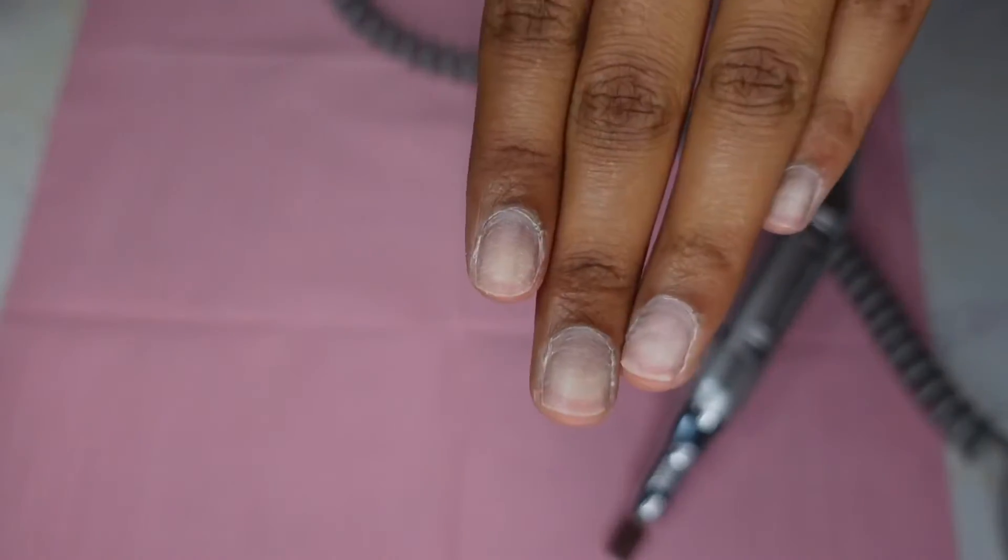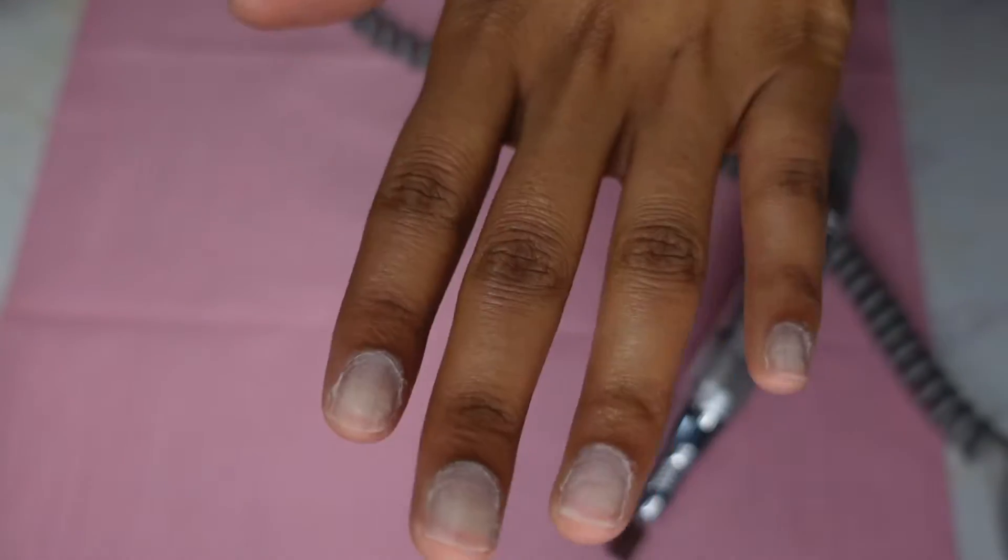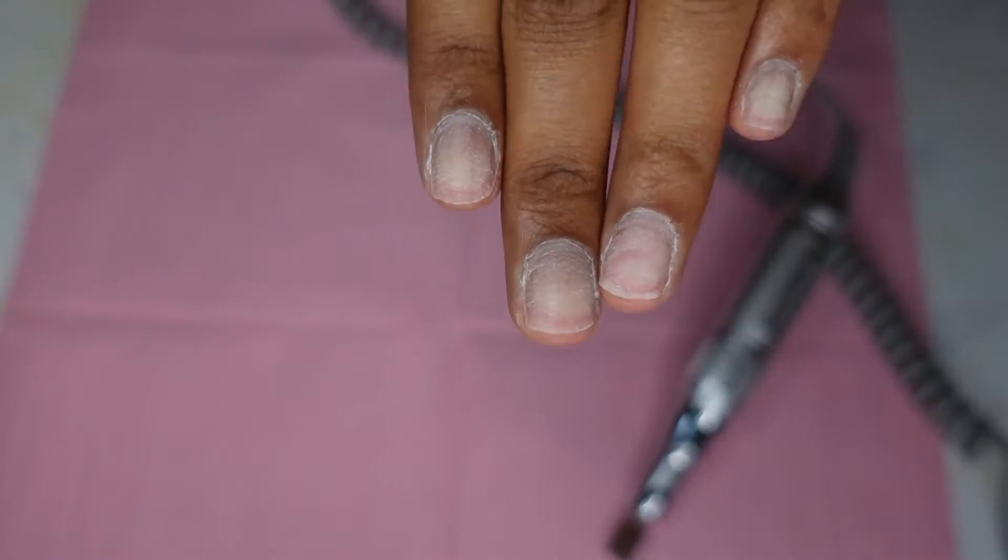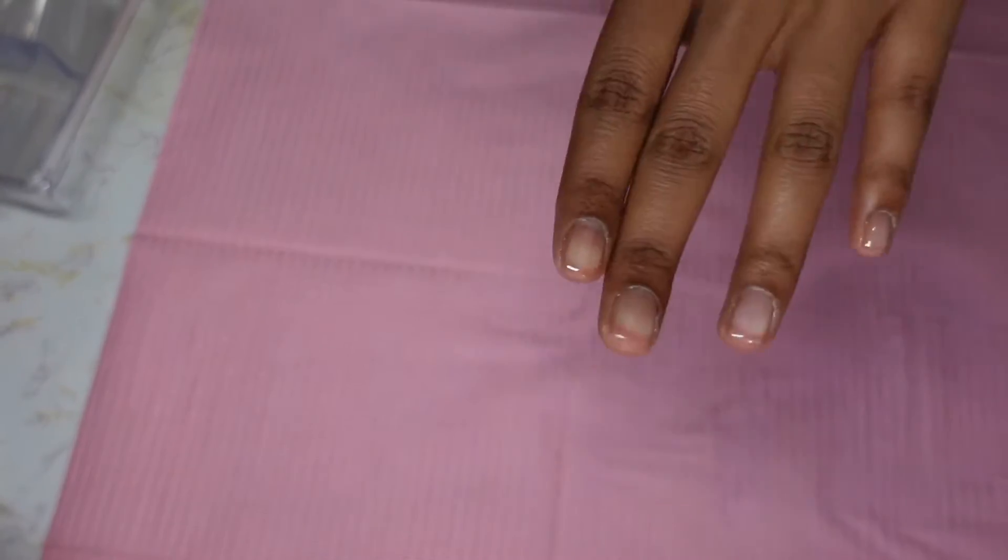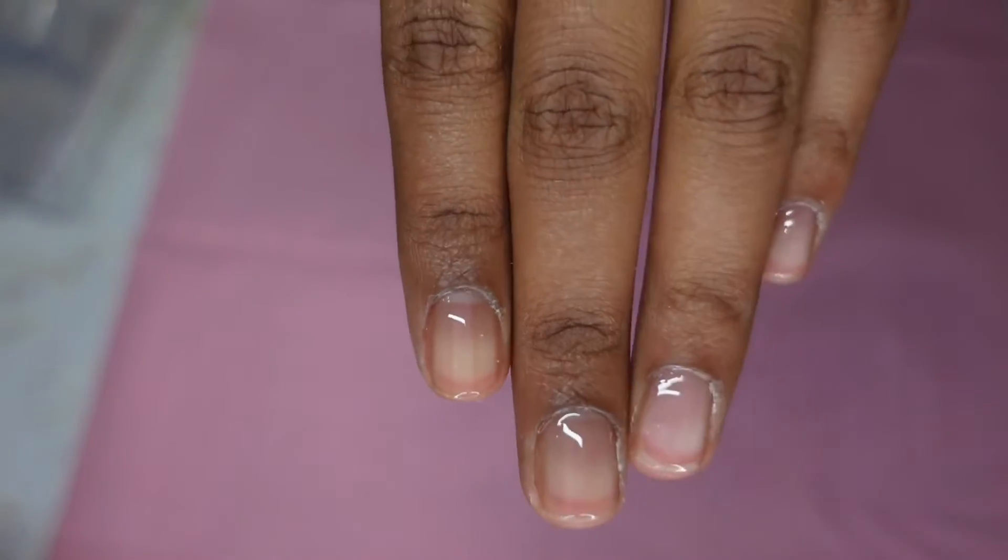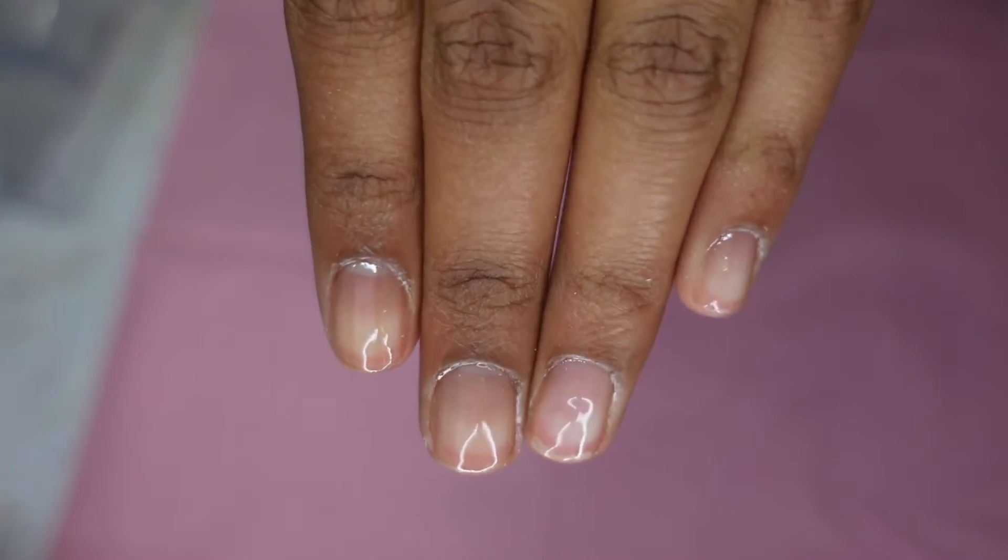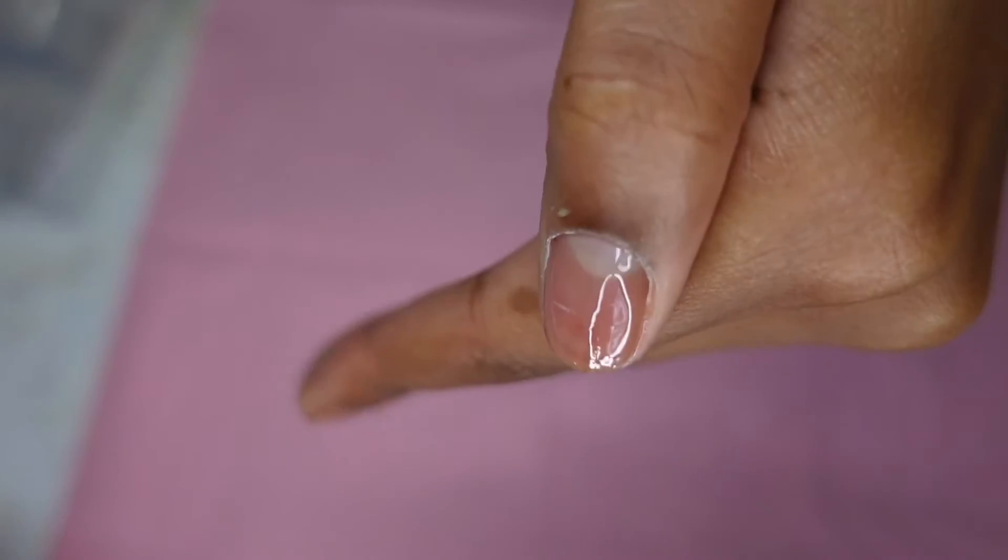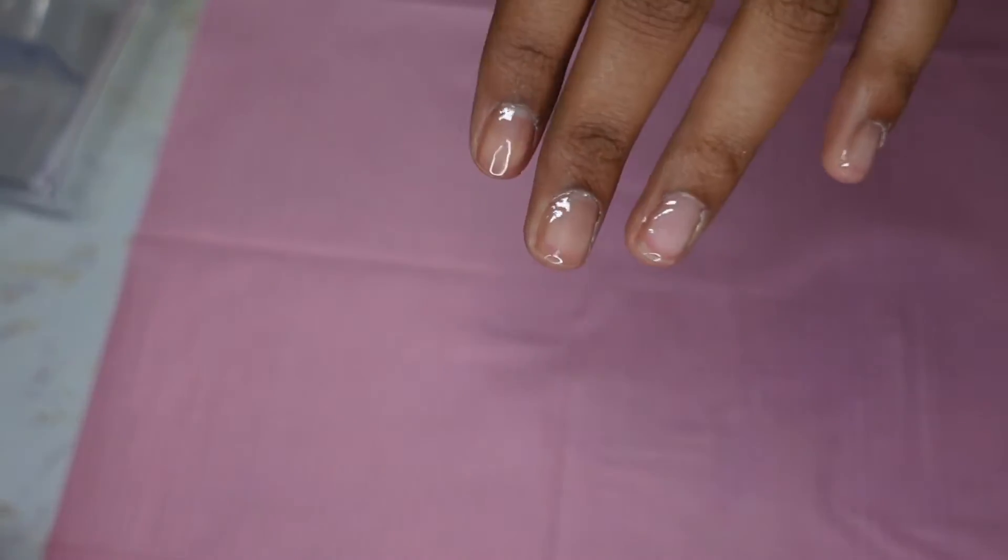And this is my fresh manicure after I'm done prepping and doing everything for my natural nails to prepare for acrylic. This is my top coat. I apply top coat on my natural nails just to make sure that I'm able to successfully and easily pull off my acrylics when I'm done.